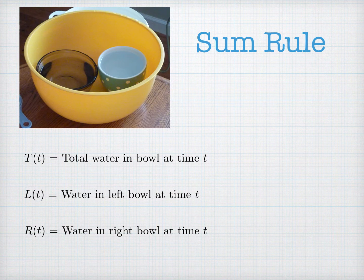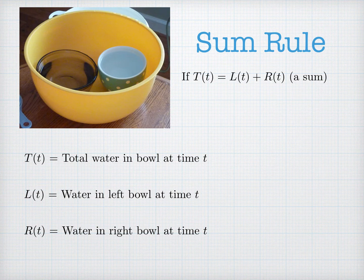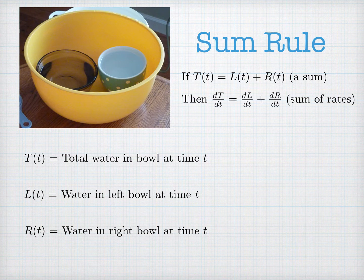So let T(t) be the total water in the bowl at time t, and L(t) will be the water added in the left bowl, and R(t) will be the water added in the right bowl. Then if we think of T as the sum of the two other functions, and we think about how fast water is being added to the bowl, the rate of water being added is just the sum of how fast the two individuals were adding the water. That is, the rate of change of a sum is the sum of the rates of change. This will be true for differences as well.